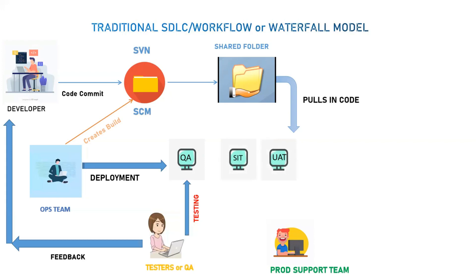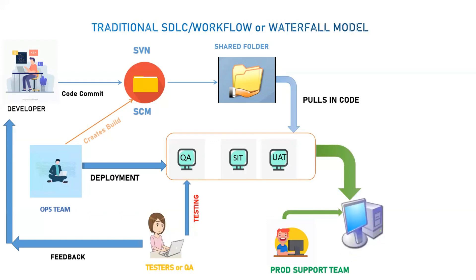A similar process is followed in other environments such as SIT and UAT. There can be many different environments in an organization. Once the code has been deployed through these environments, the production support team comes into picture — they pull the code and get it deployed into the production environment. This is only done once the change ticket is approved in CAB meetings or by the change management team, to keep track of changes going into production. This whole lifecycle used to take weeks or sometimes months.